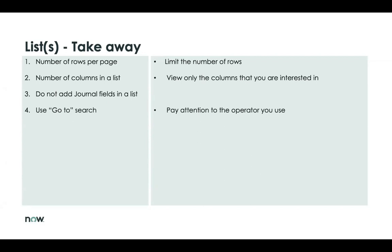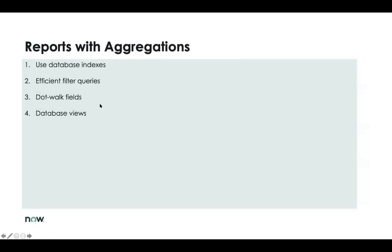Moving forward to aggregations. Reports with aggregations — these are reports where you use group-by fields. You can say, for example, give me the number of records grouped by category or based on any set of conditions. What affects the performance of these types of queries is a bit different from lists. In aggregations, the factors include: the database index — which also affects lists — efficient filter queries, and then dot-walks and DB views, which can be a bit more technical, but I'll try to explain as simply as I can.